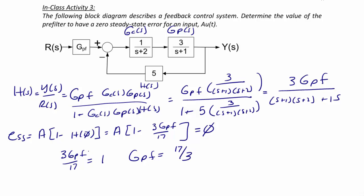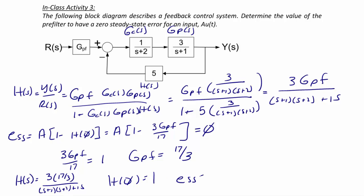The value of the pre-filter must be equal to 17 over 3. So now if we look at our original transfer function, we get H(S) equal to 3 times 17/3 divided by (S+1)(S+2) plus 15. So H(0) is now equal to 1, and our steady state error does indeed equal A times 1 minus H(0), which equals 0.